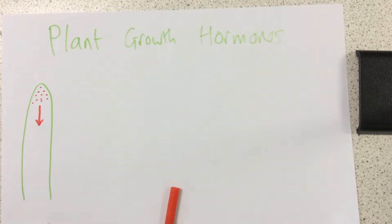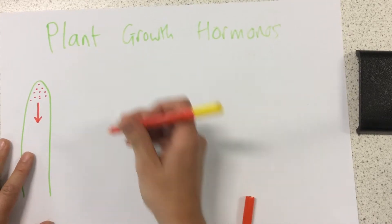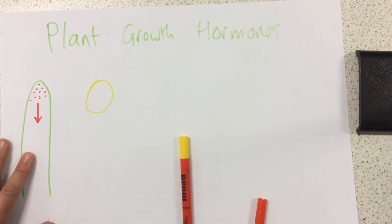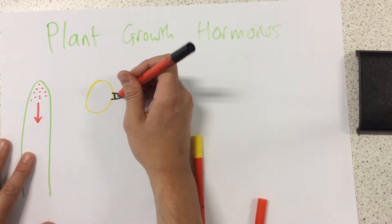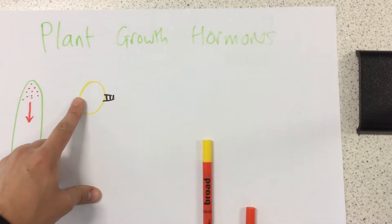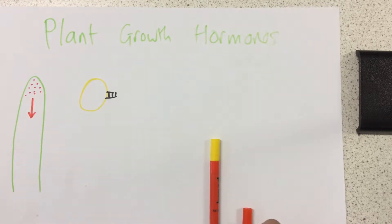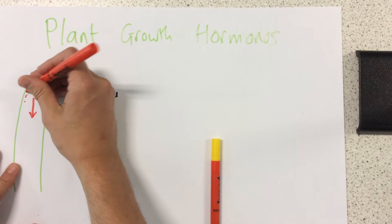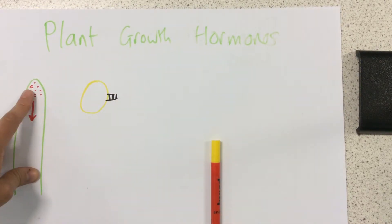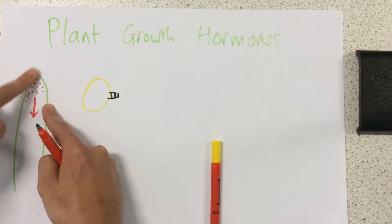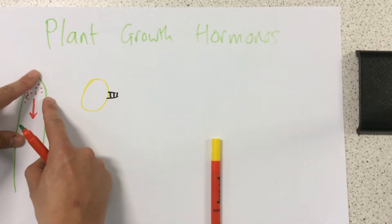Now, when we have a light introduced, so let's say this was a light bulb right here. The light actually causes some of the auxins to break down. So the auxins will accumulate on the other side, on the dark side from the light.